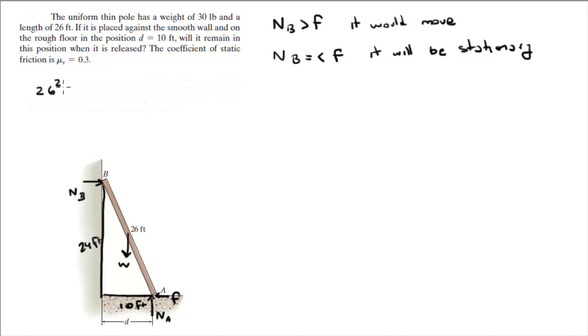26 squared minus 10 squared is equal to y squared. Let's call this y. You solve for y, you get 24. That's basic trigonometry. You guys should be fine with this.